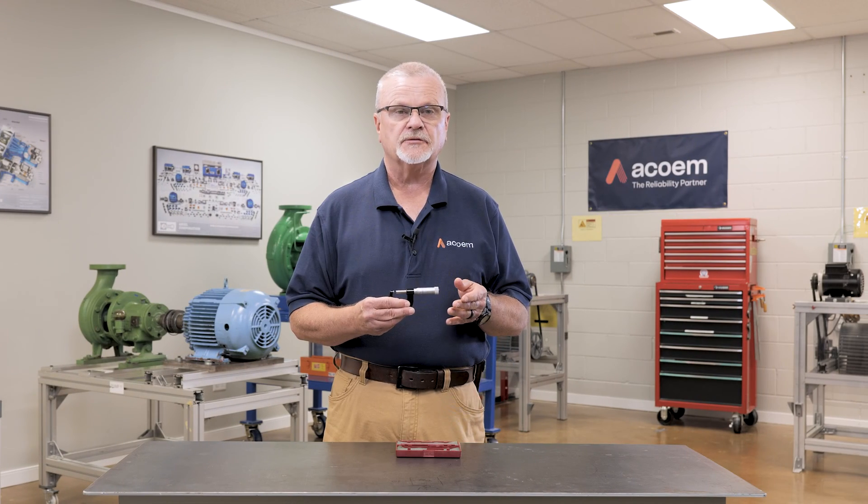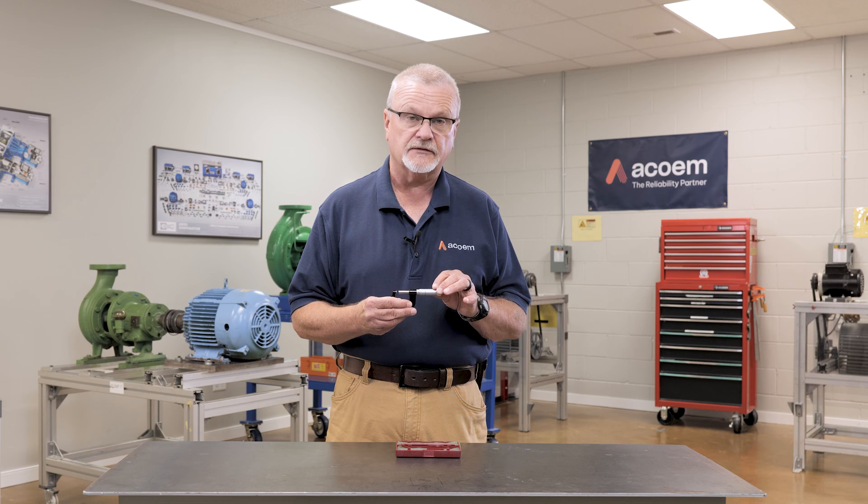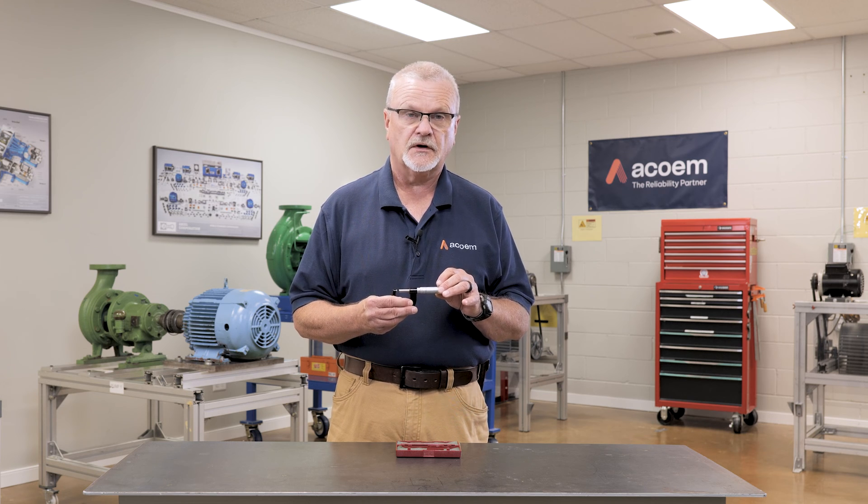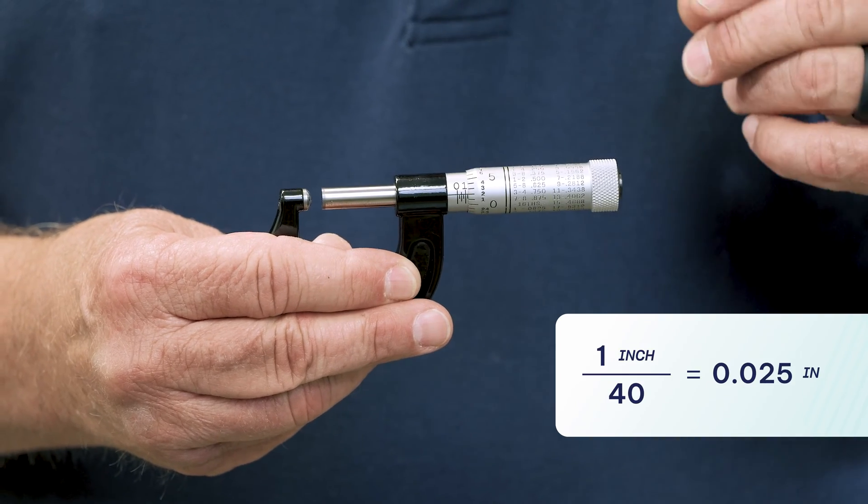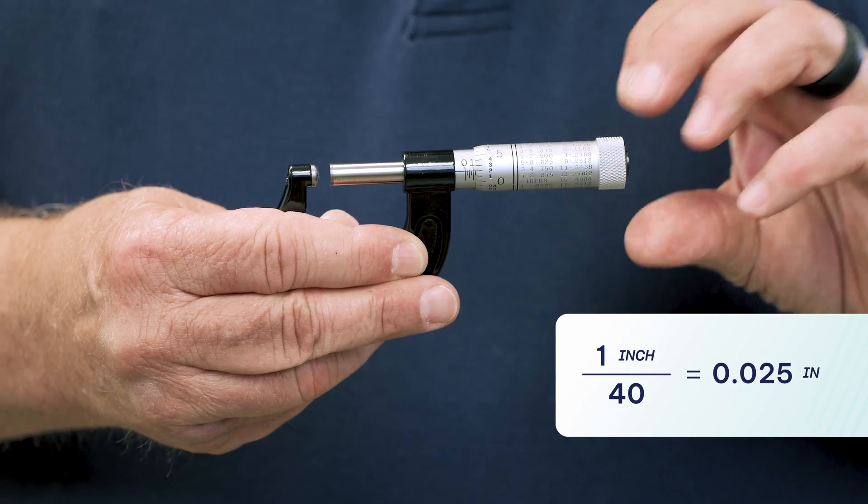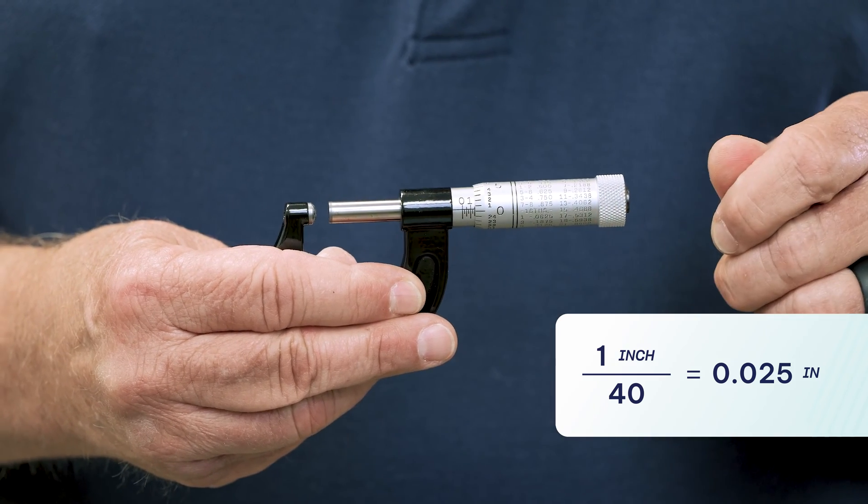A micrometer measures by the use of precision ground threads inside of here, 40 threads per inch. If I take one inch and divide it by 40, it gives me 25 thousandths of an inch. So one full rotation of the thimble is 25 thousandths.